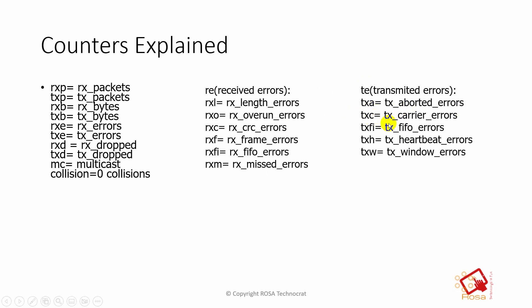On the transmit side, you will have TX aborted errors, TX carrier errors, TX FIFO errors, TX heartbeat errors, and TX window errors. We don't see CRC or frame errors on the transmit side because the physical layer only comes into play once the packet is out of the firewall. So CRC errors appear only on the receive side — if you see CRC or frame errors on an interface, the issue is related to the physical cable or layer one.